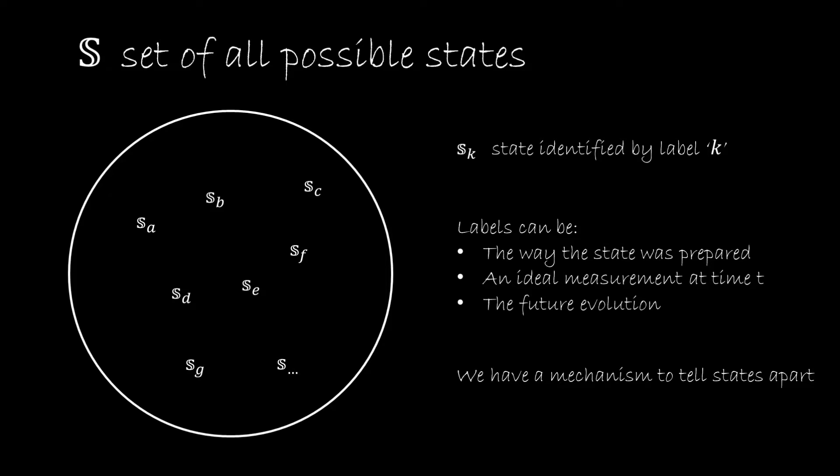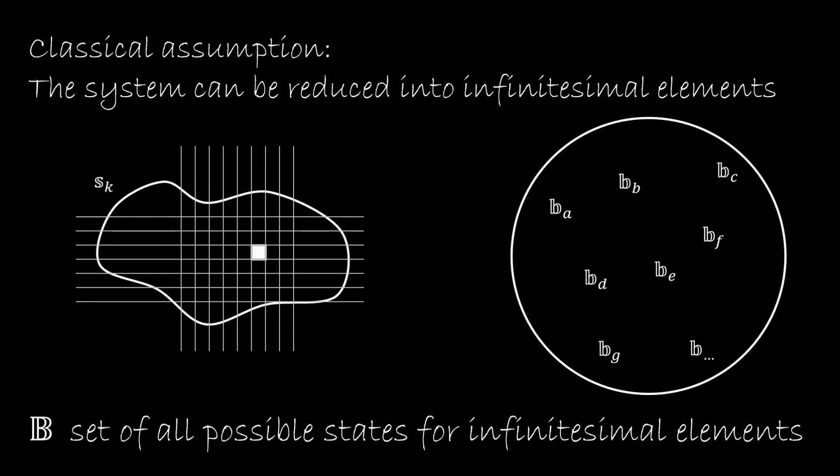Now, another assumption that we're going to make on these states is what I call the classical assumption. And this states that the system can be reduced into infinitesimal elements, and each element is going to have its own state, and we can keep track of the evolution of each particular element. So if you imagine a rock, the whole rock, you can think of it as made of little tiny pieces of rock, each of them with their own position, and each of them with their own momentum.